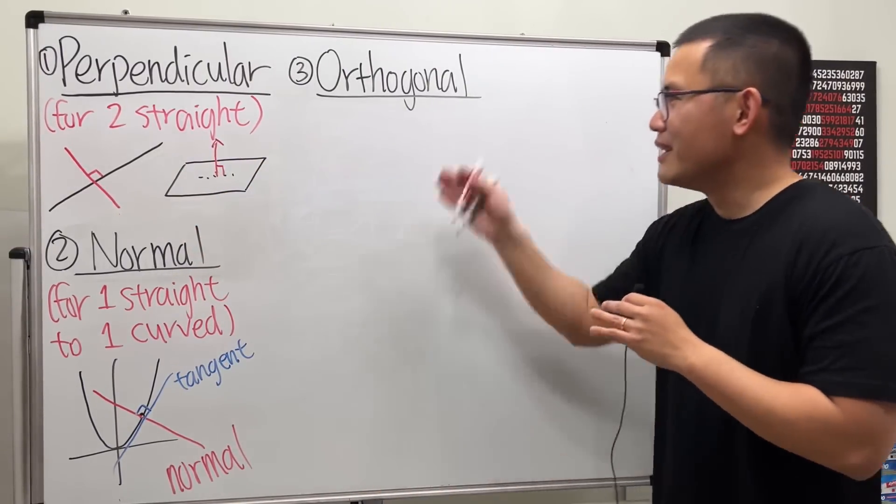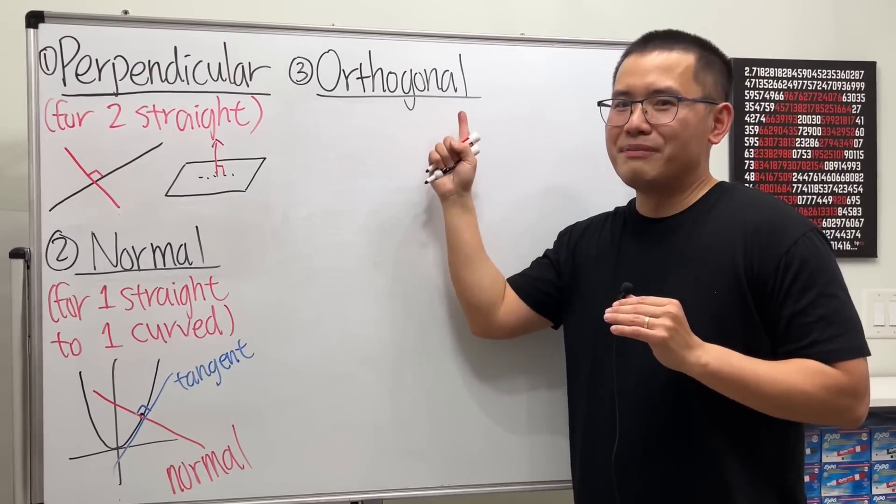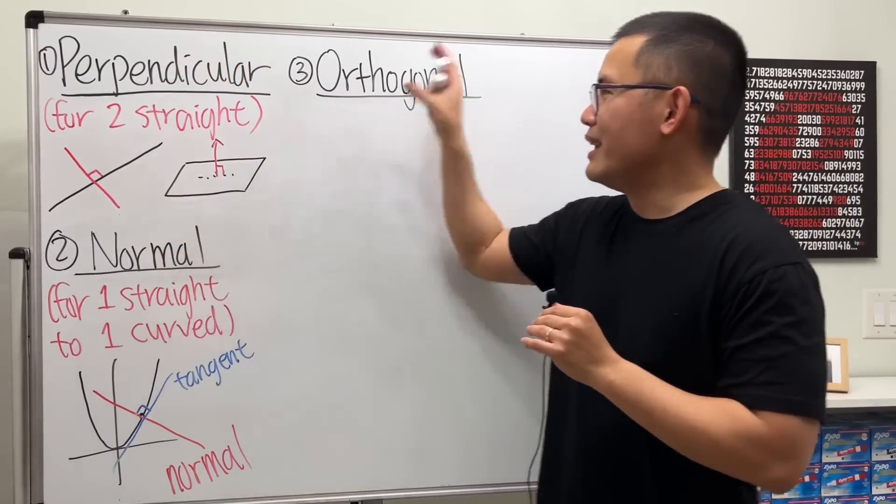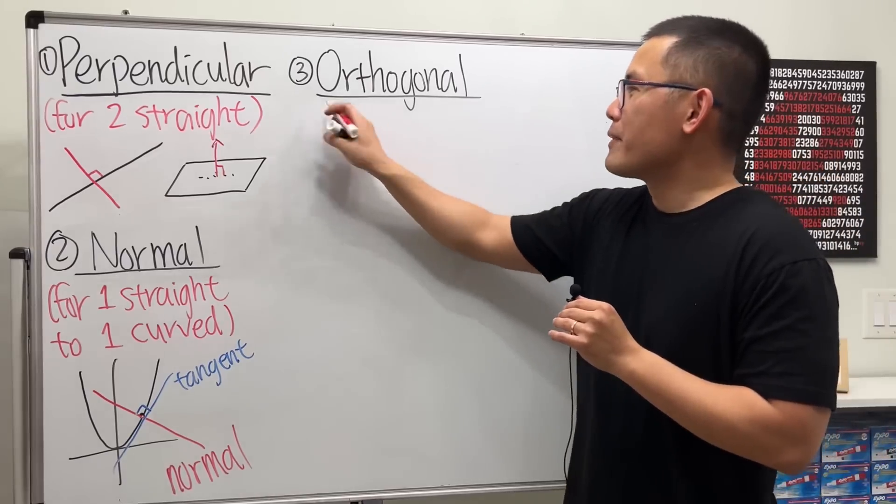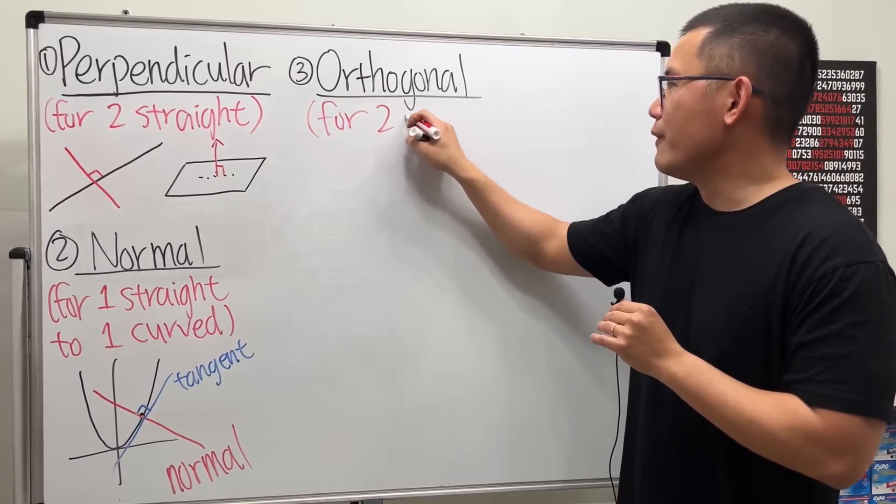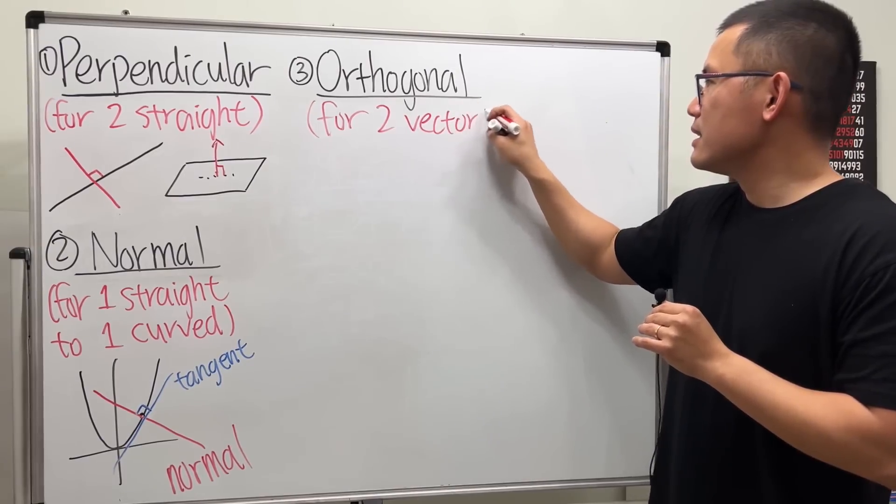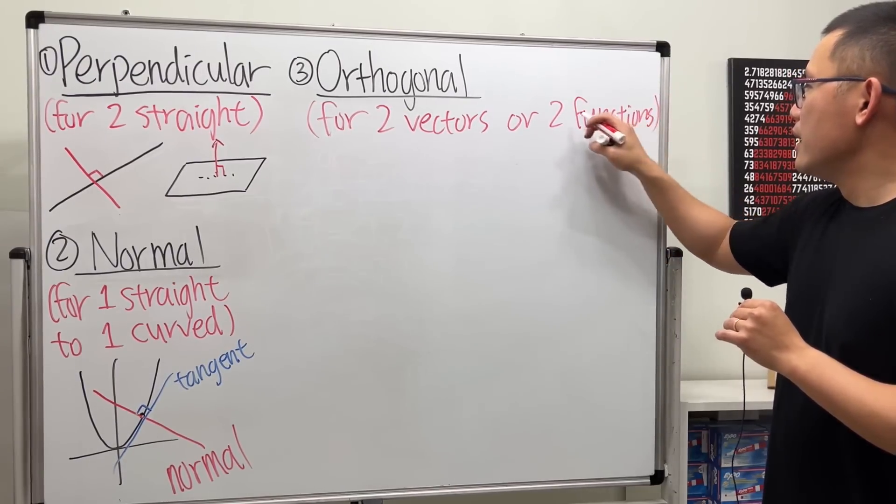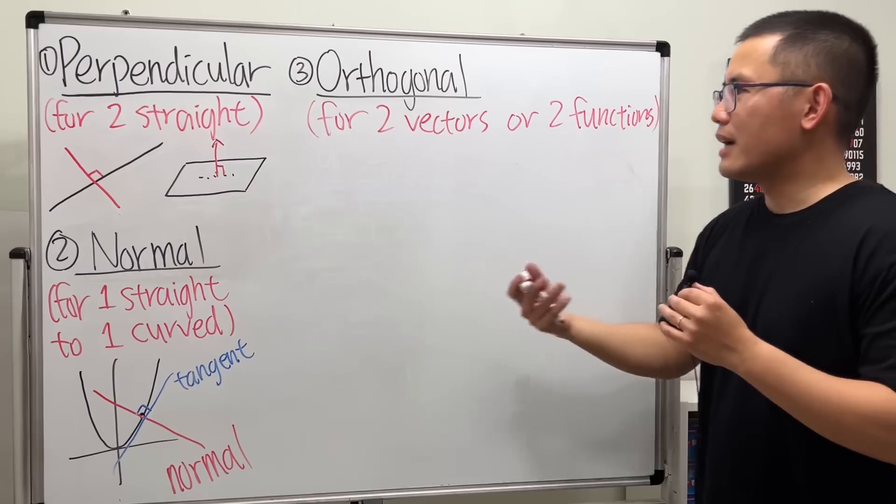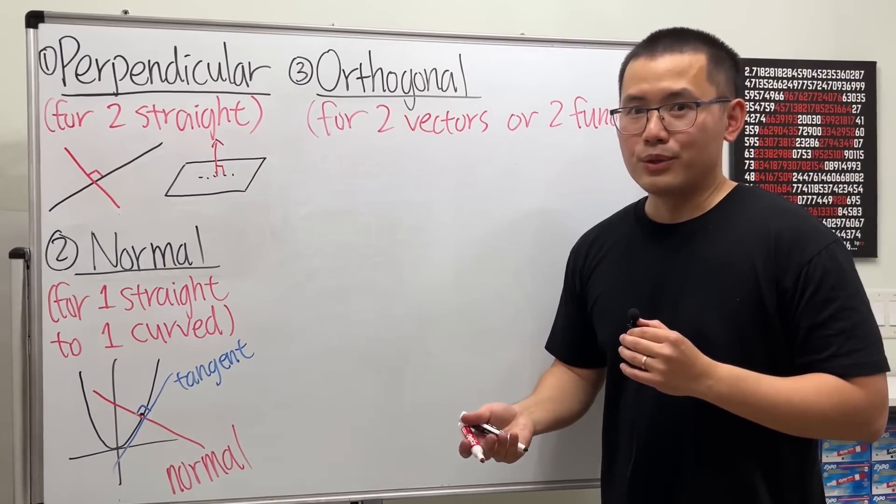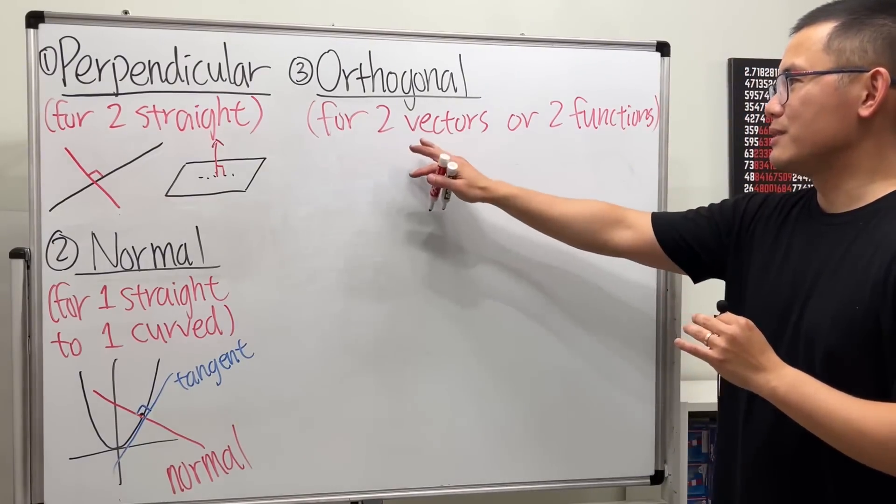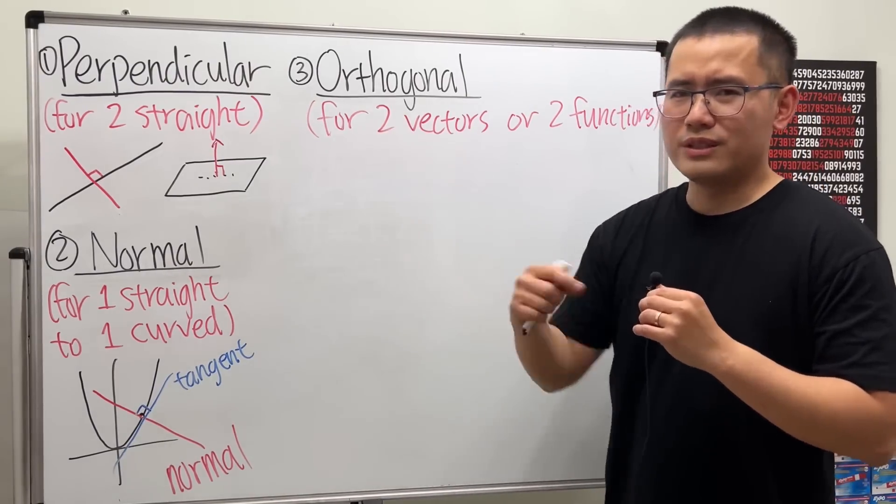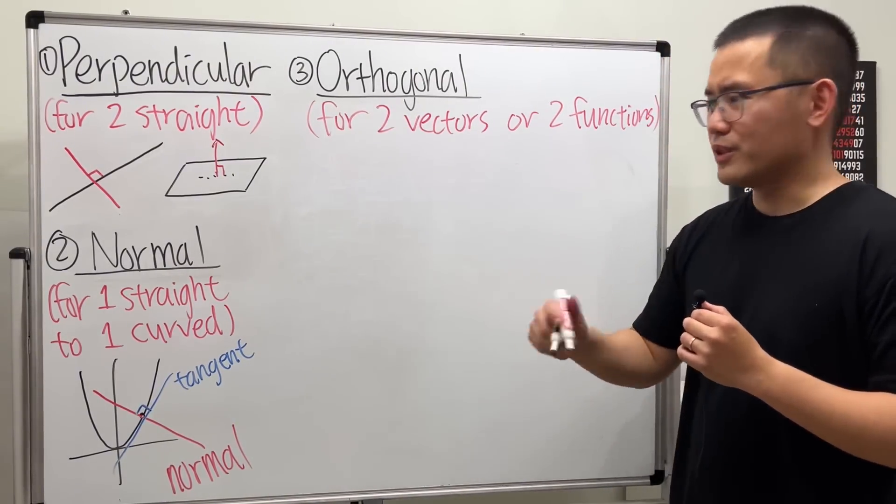Now, the last one: orthogonal. This is the most mathematical term compared to the other two. This is level 1, level 2, and level 3. So what do I mean by this? Because I will tell you, this is for two vectors or two functions. And sometimes, maybe when you are in a higher level math class, you can talk about two transformations and all that good stuff. But let's just focus on vectors and functions. And you might be wondering, vectors - we can see vectors. You can just draw this like a ray or like an arrow. How come? Well, check this out.